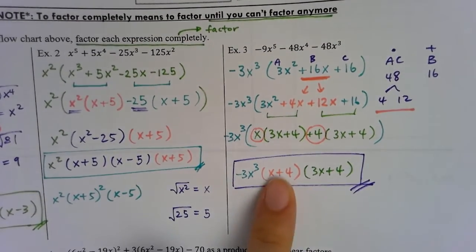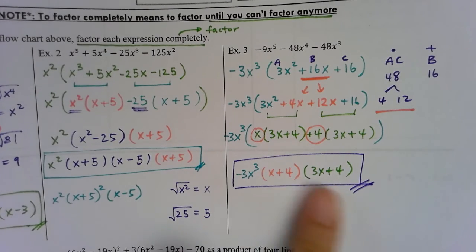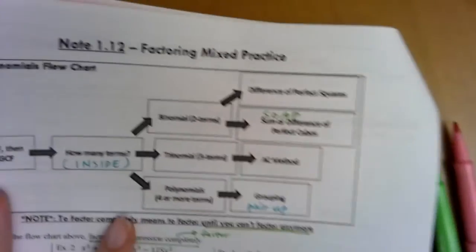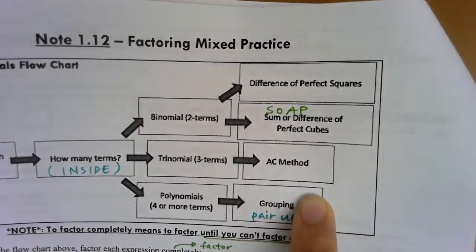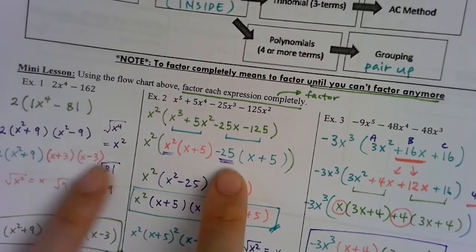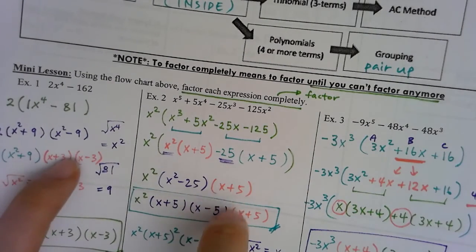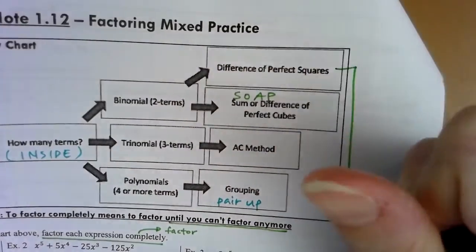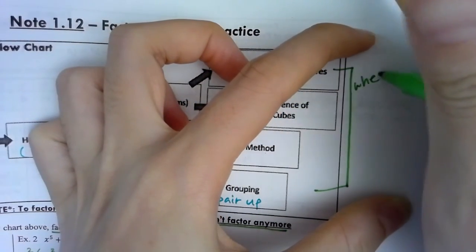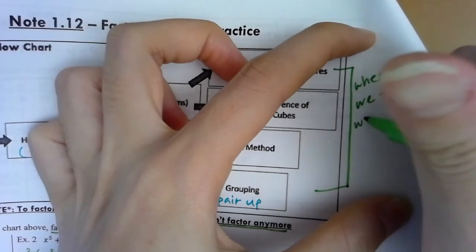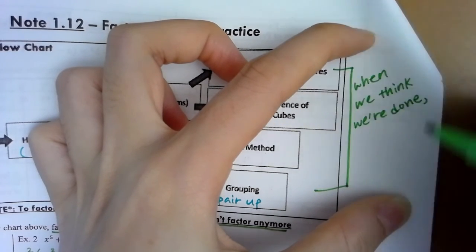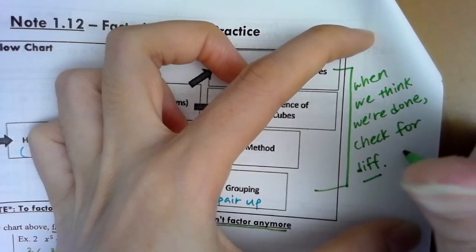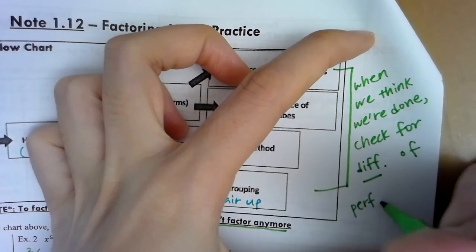Checking inside our answer — I don't see any difference of perfect squares, so we're done. One final note to add: after you think you're done factoring, always check for a difference of perfect squares. Add this reminder to your notes: when you think you're done, check for difference of perfect squares.